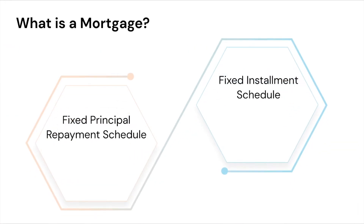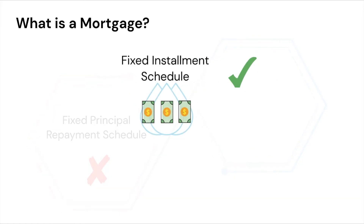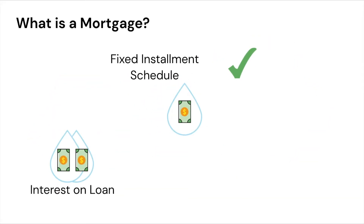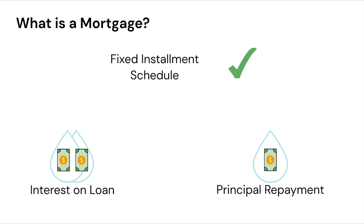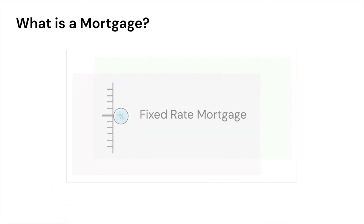Unlike many other loans which have fixed principal repayment schedules, home mortgages usually have a fixed installment repayment mechanism. A portion of the monthly payment goes towards interest accrued on the loan for that month, and the balance goes towards a reduction of the principal.